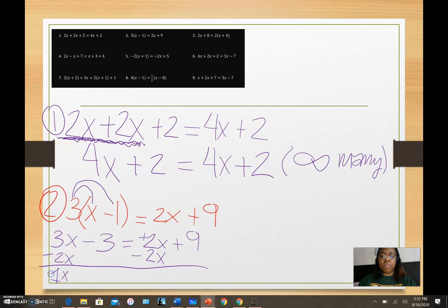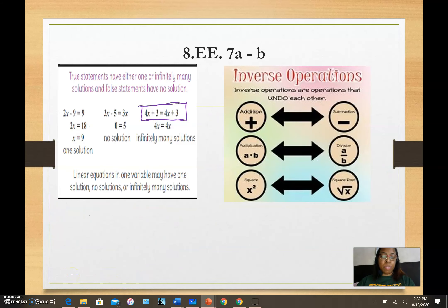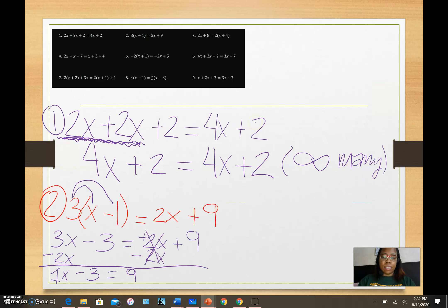That leaves me with just 1x over here. You can write the 1, you don't have to. 2x minus 2x becomes 0 so it cancels out and I'll leave my 9. So x minus 3 equals 9. Some number minus 3 equals 9. How do I figure out some number? I know the opposite of subtraction is addition, so I want to add this 3 to both sides.